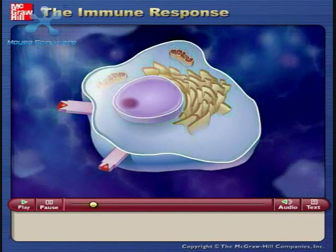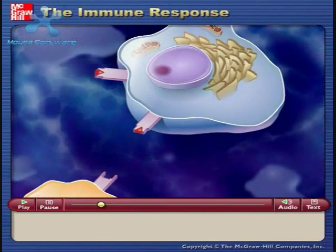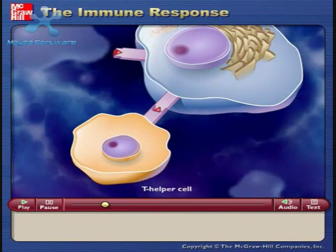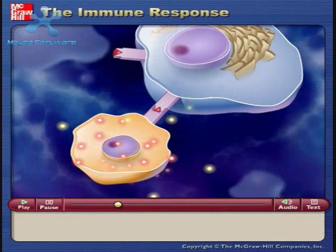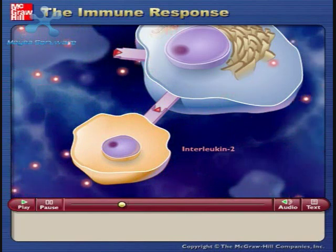Macrophages with antigen fragments displayed on their surfaces are called antigen-presenting cells. An antigen-presenting macrophage interacts with a T helper cell that can recognize the same antigen. During the interaction, the macrophage releases a chemical alarm signal called interleukin-1, which stimulates the T helper cell to secrete interleukin-2.